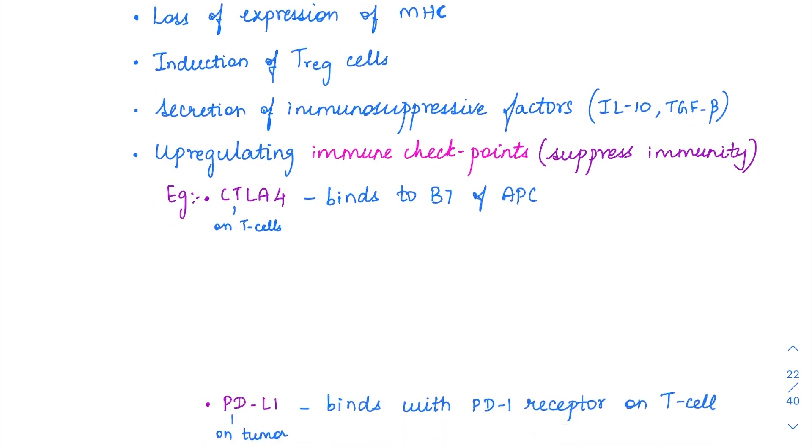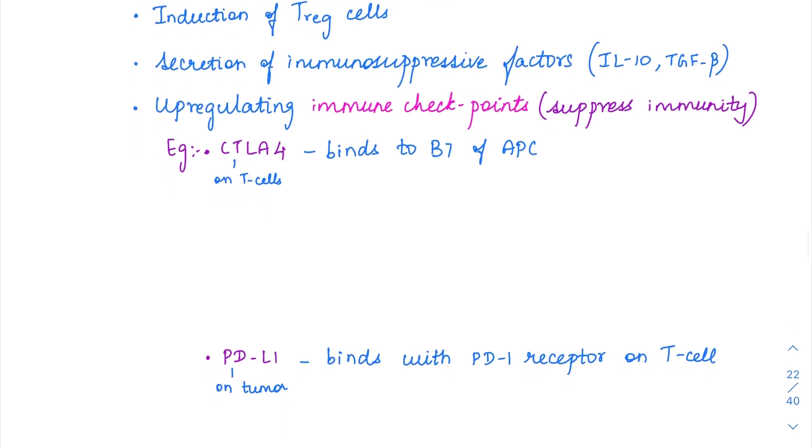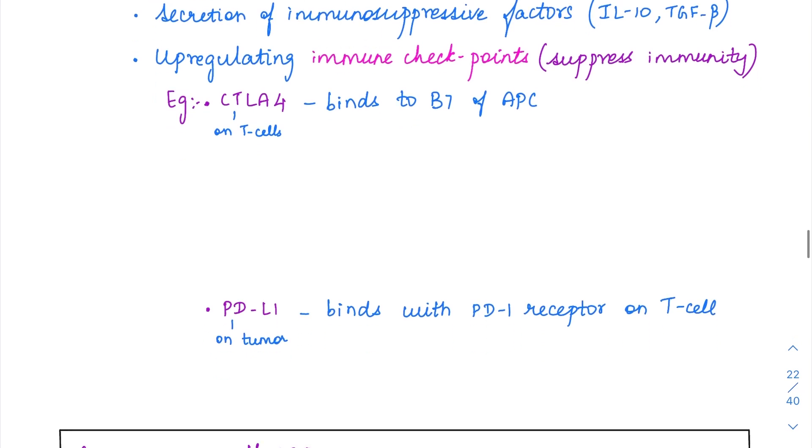Then induction of T regulatory cells. T regulatory cells are the inhibitory kind of signals. The tumor cells are giving command to the host Treg cells to be upregulated. And then they will cause the secretion of immunosuppressive interleukins and cytokines - interleukin 10, TGF-beta. Tumor cells will start producing these interleukins cytokines and also it will induce the surrounding stromal cells to produce these cytokines. An anti-inflammatory background is going to be created and it is safe in that background.